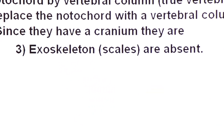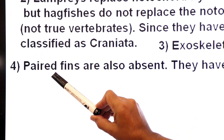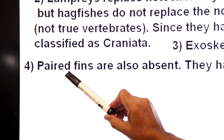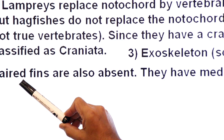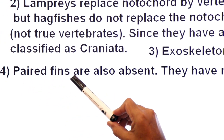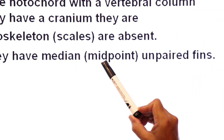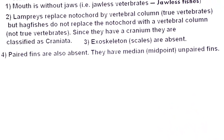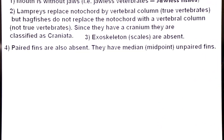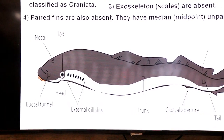Paired fins are also absent. Fins are locomotory organs. They do have fins, but only unpaired ones — paired fins are absent. They have median, meaning midpoint, unpaired fins. Now let us discuss which unpaired fins are present in Agnatha.